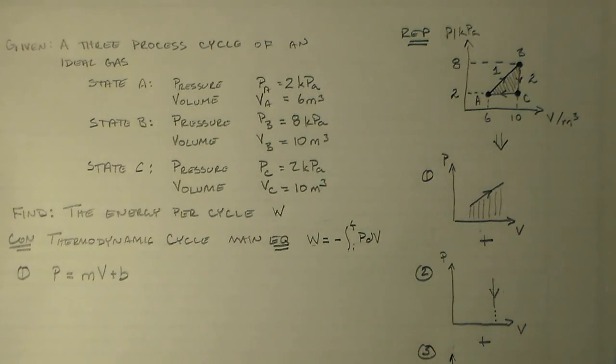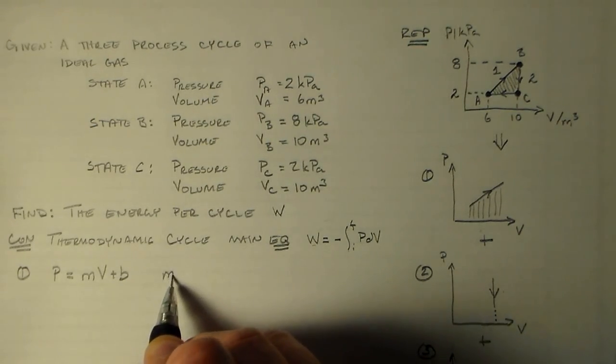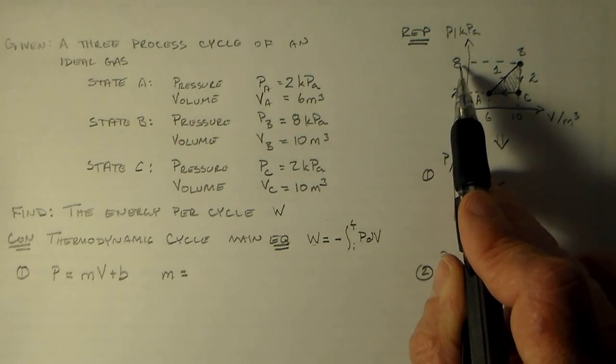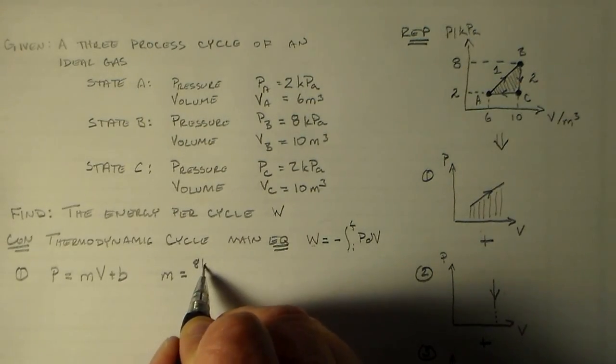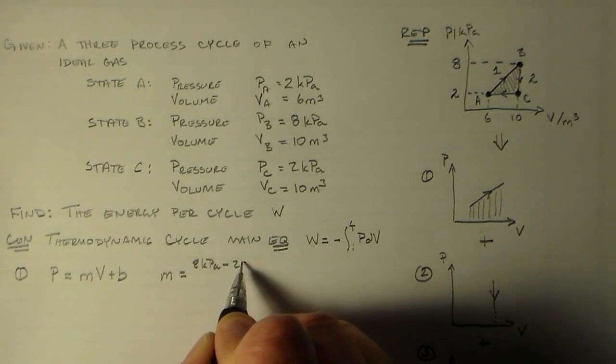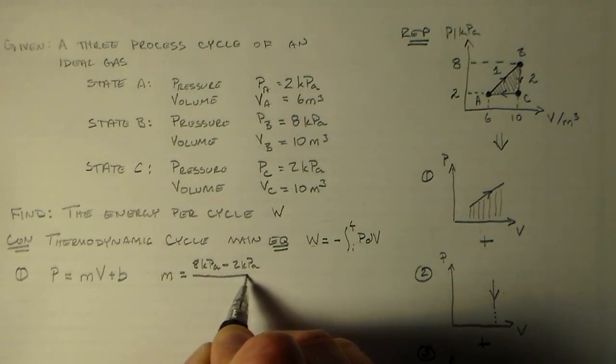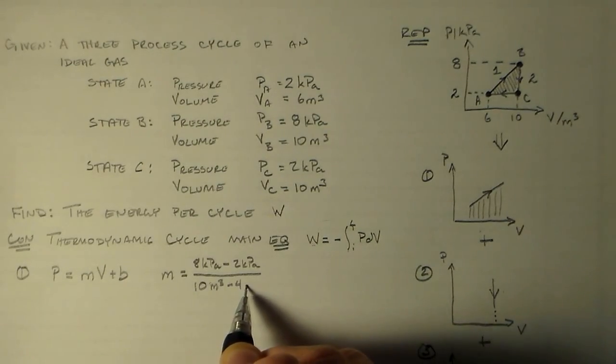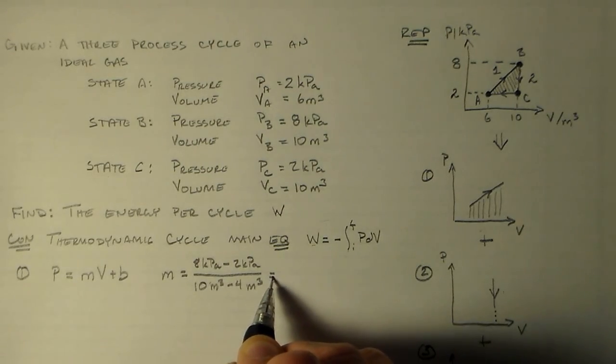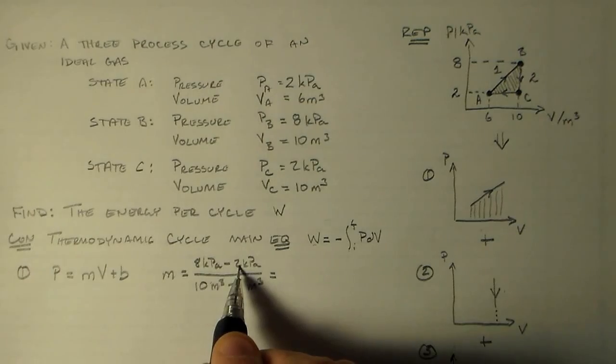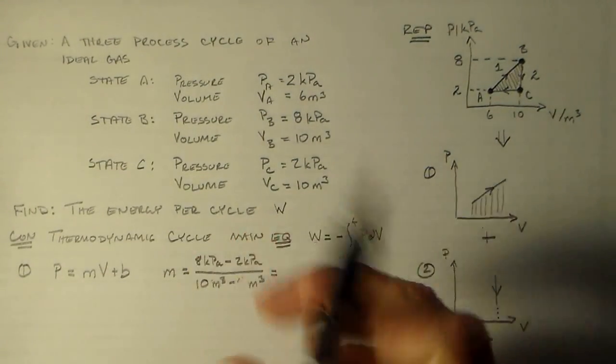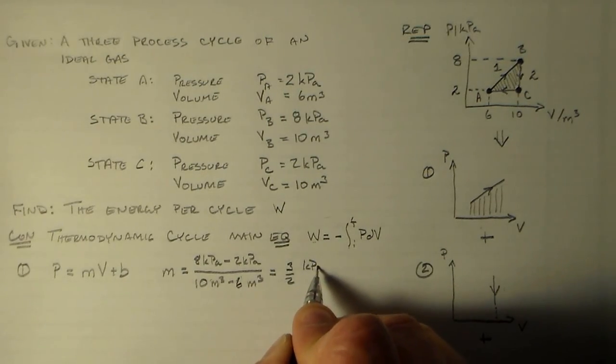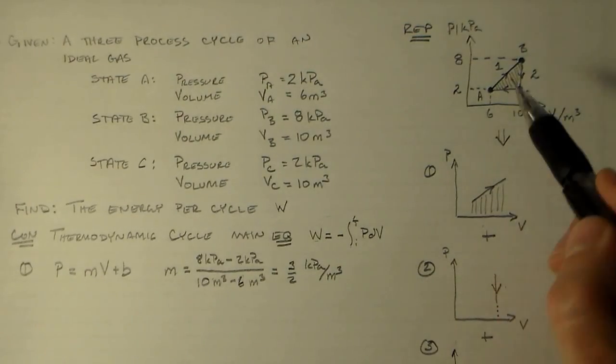And this slope here is going to be rise over run. So we have eight kilopascals minus two kilopascals over 10 meters cubed minus six meters cubed. So that's six fourths or three halves, kilopascals per cubic meter. That's the slope of this line.